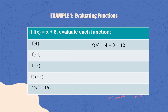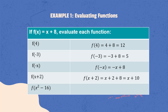The same thing with f of negative 3. By substituting this value onto the function, we will get negative 3 plus 8, which is equal to 5. For f of negative x, just replace x with negative x. Other cases prefer having a positive term at the beginning, so the answer may be written as 8 minus x. But in our case, negative x plus 8 will do. How about f of x plus 2? By replacing the value of x and adding the constants, we will get x plus 10.